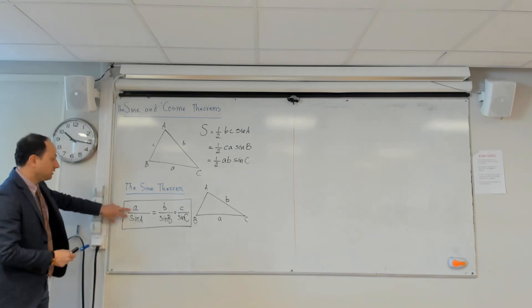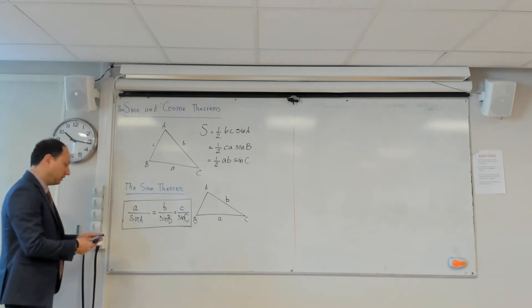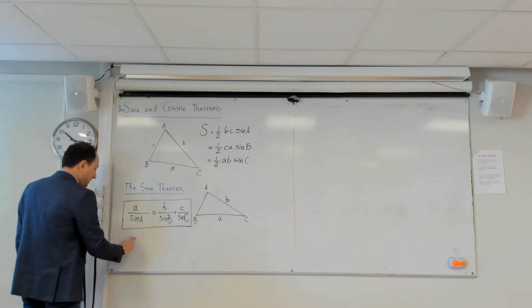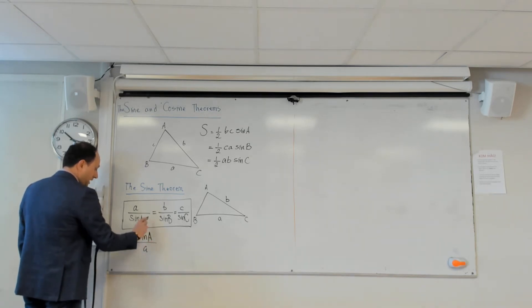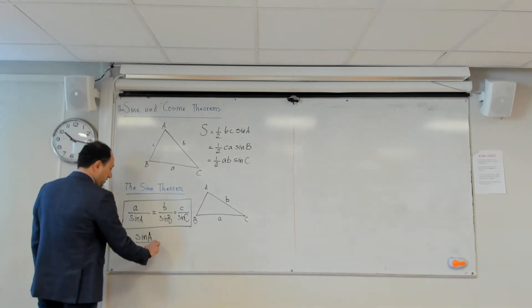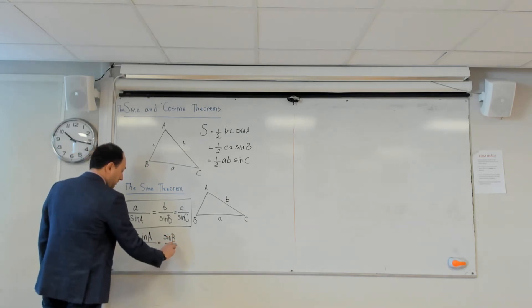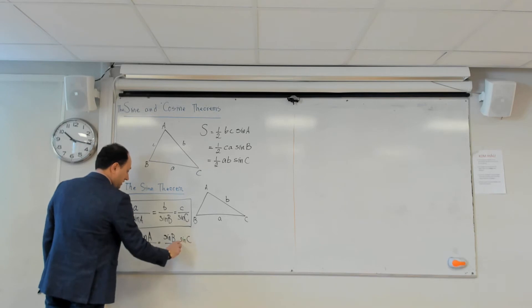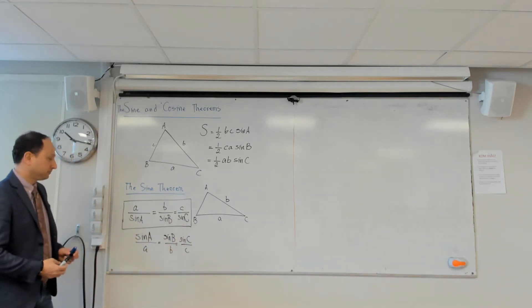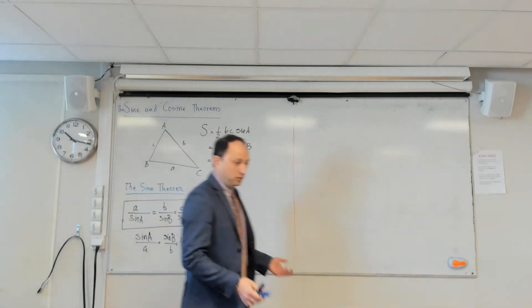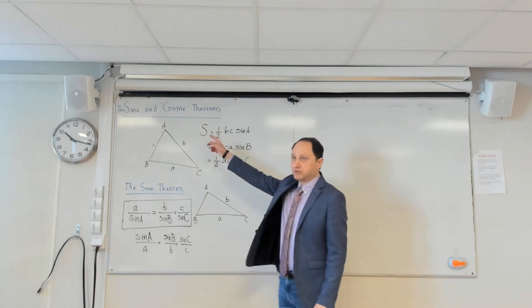Some books write this the other way around — sine A over a equals sine B over b equals sine C over c — with the angles on top and sides on the bottom. That's completely equivalent. If you know one form, the other is clear. This is not a very strange rule; it is more or less the area rule.